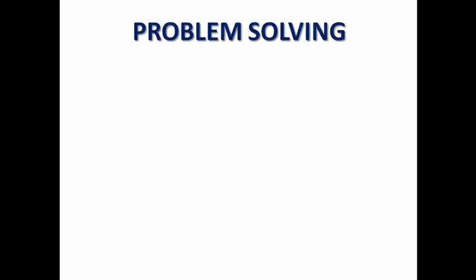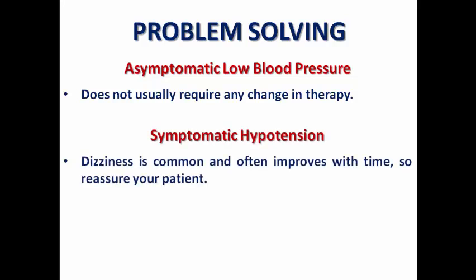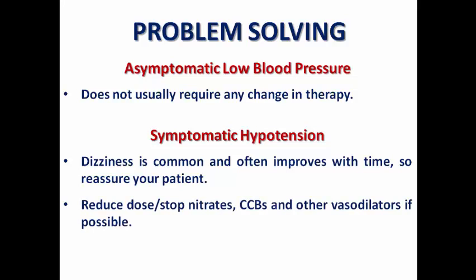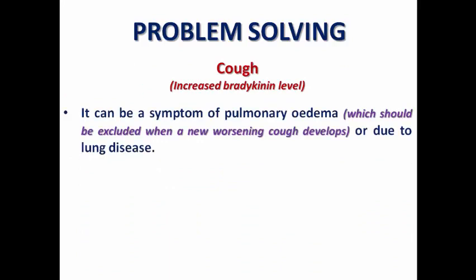For clinical problems: asymptomatic low blood pressure does not require any change in therapy, as it is expected. For symptomatic hypotension, reassure the patient first — dizziness is common at the start and may improve with time. In some cases, reduce or stop nitrates, calcium channel blockers, or other vasodilators if possible. If there are no signs of congestion, consider reducing the diuretic dose to improve blood pressure and perfusion. Regarding cough, exclude primary congestion or lung disease before attributing it to ARNI.